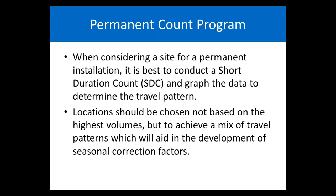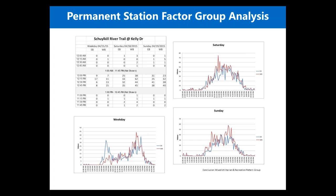When considering a site for a permanent installation, it's best to conduct a short duration count first and graph the data to determine the travel pattern, so you don't end up with all stations showing the same recreational pattern. Location should be chosen not based on highest volumes, but to achieve a mix of travel patterns, which will aid in developing seasonal correction factors. On the motorized side, we have permanent stations on all classifications of roadways in both urban and rural areas — not just interstates — to help turn 48-hour counts into AADT.